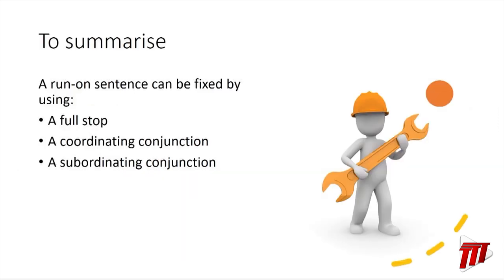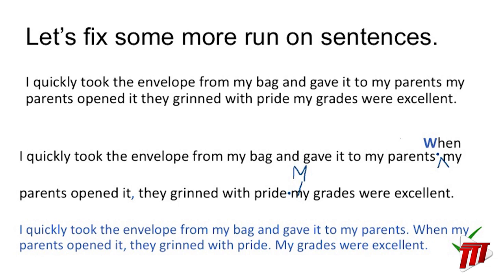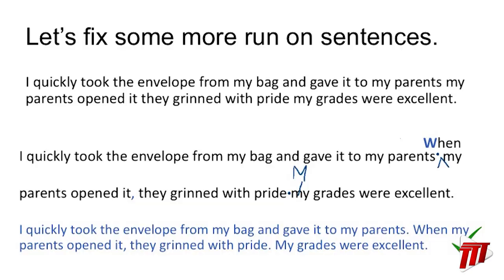To summarize: a run-on sentence can be fixed by using a full stop, by using a coordinating conjunction, and also by using a subordinating conjunction. But it doesn't make sense knowing these things unless we practice. Let's see if we can fix some more run-on sentences using the rules we've applied in these lessons. Here's a student's run-on: "I quickly took the envelope from my bag and gave it to my parents my parents opened it they grinned with pride my grades were excellent." We can't breathe because we don't know where the sentence ends — we need to fix this.